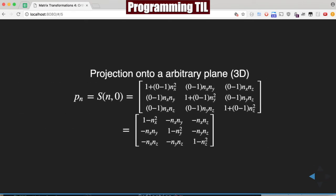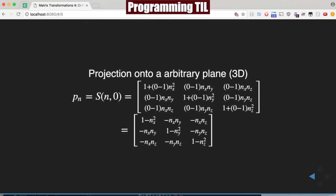And then finally, you can do the exact same thing with projection onto a 3D arbitrary plane. Again, the Ks were 0, so we replaced all those Ks with 0s to determine exactly what we want here. And now we have this nice clean matrix that we can use to compute projection onto an arbitrary plane.